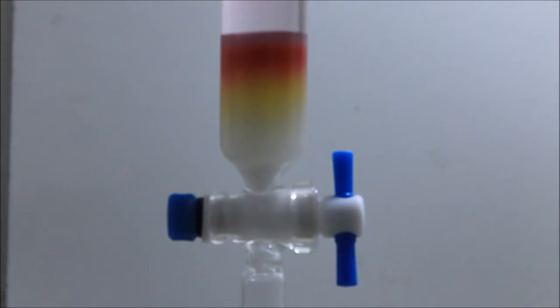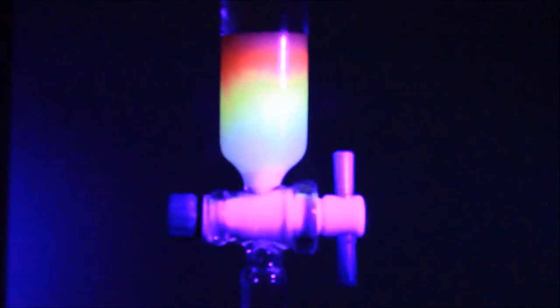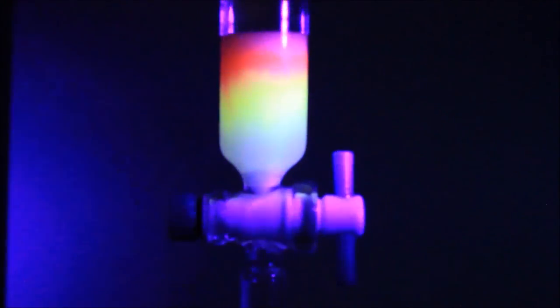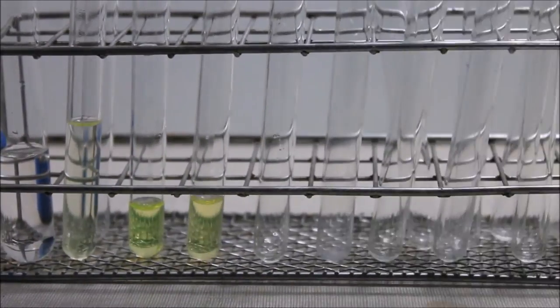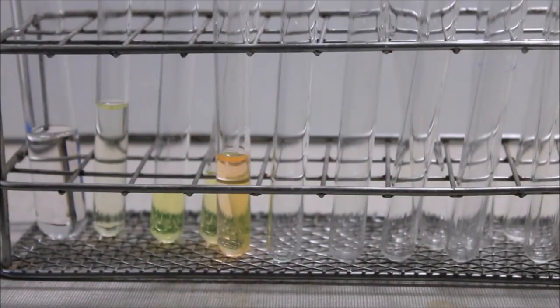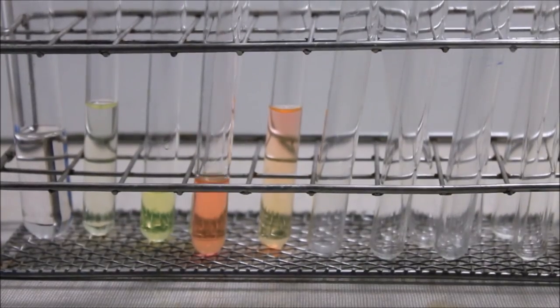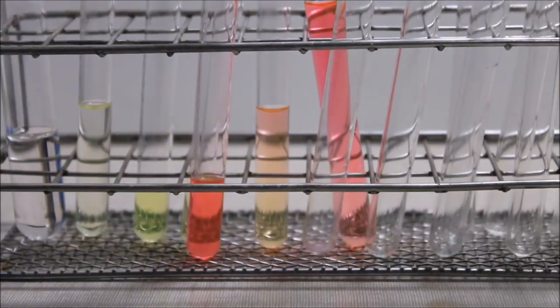You can clearly see how the different dyes spread out through the column at different rates as a function of their polarity. Both compounds are fluorescent; this can be seen under the UV light. Here you can see how the fluorescein is collected in the first tubes and the safranin in the last ones, achieving the separation of the different compounds.